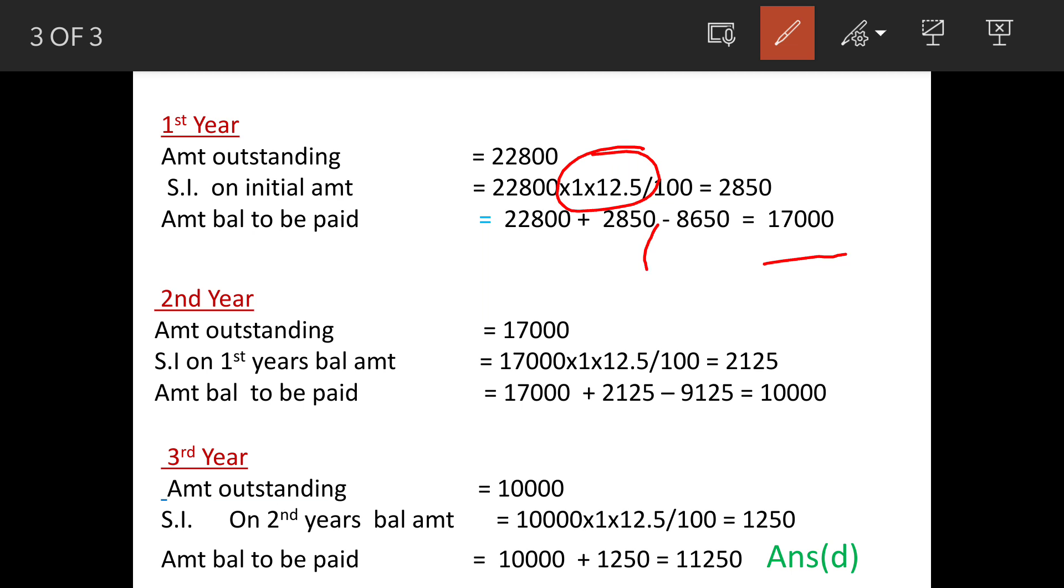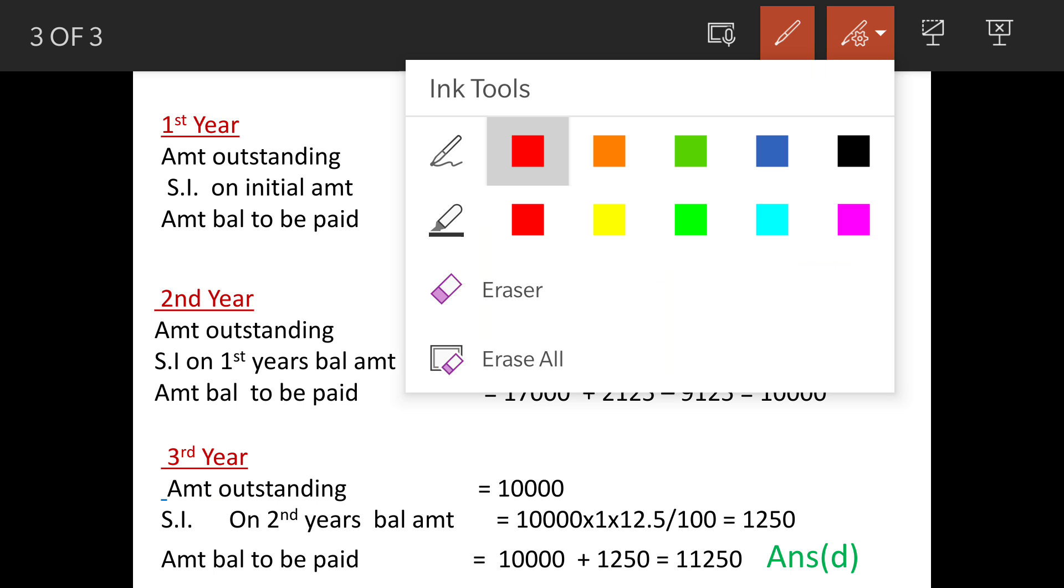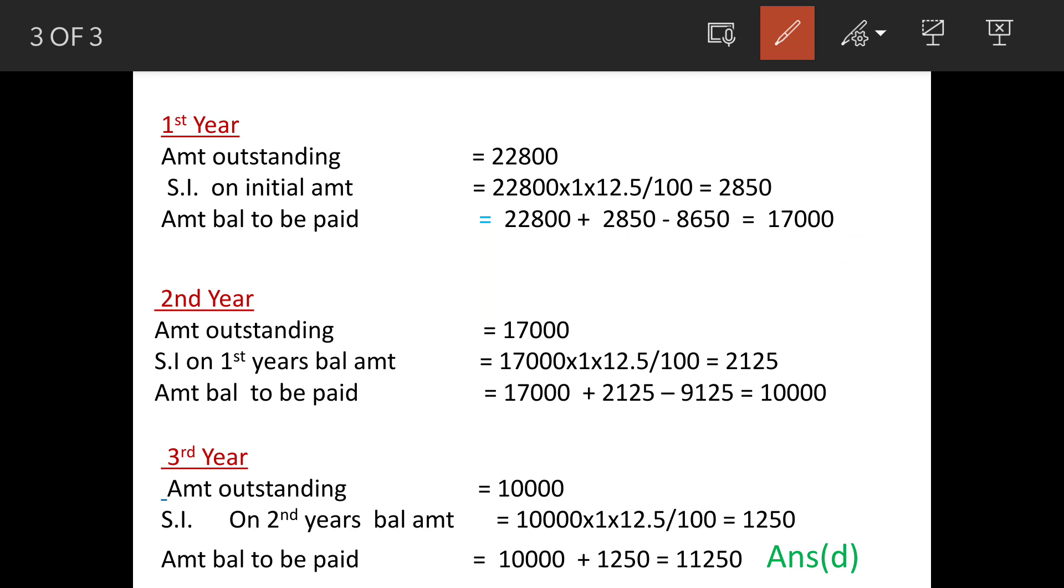So now we carry forward this amount to second year. Second year, the outstanding amount is 17,000. This is inclusive of interest of 12.5 percent on previous year. So when we work out simple interest here on second year,